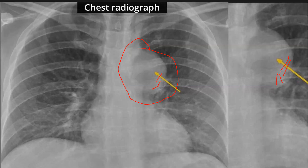Let us look at another radiological sign. We see here that the descending aorta is well seen and clearly visible. This indicates that the mass is not in the posterior mediastinum, because we can see the descending aorta interface.